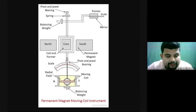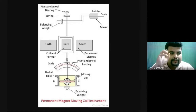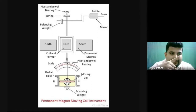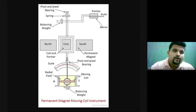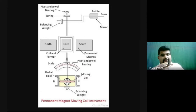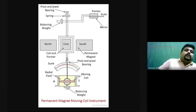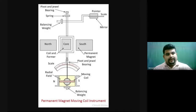The working principle is similar to a DC machine — it's like a motor that doesn't fully rotate. If 5 amperes of current is given, the coil deflects by a specific degree only. We calibrate the instrument: for 1 ampere, we identify how many degrees it moves — 20, 30, or 40 degrees — and for the full capacity of 10 amperes, we determine the total angular movement.